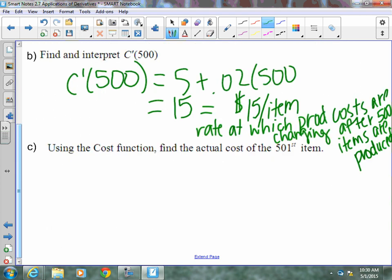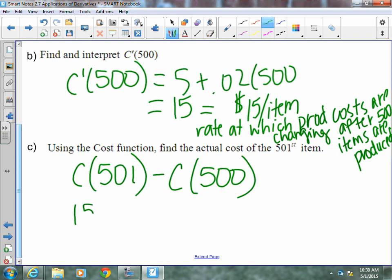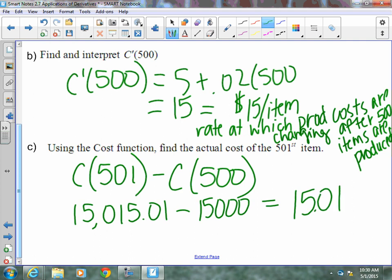How do we find the 501 item? We take the cost of making 501 items and we subtract the cost of making 500 items. Cost of making 501 items is $15,015.01. Cost of making 500 is $15,000. So, the cost of making the 501st item is actually $15.01. Very close to the marginal cost which was $15.00, a predictor of what the next one was probably going to cost but not exactly because it actually cost $15.01.